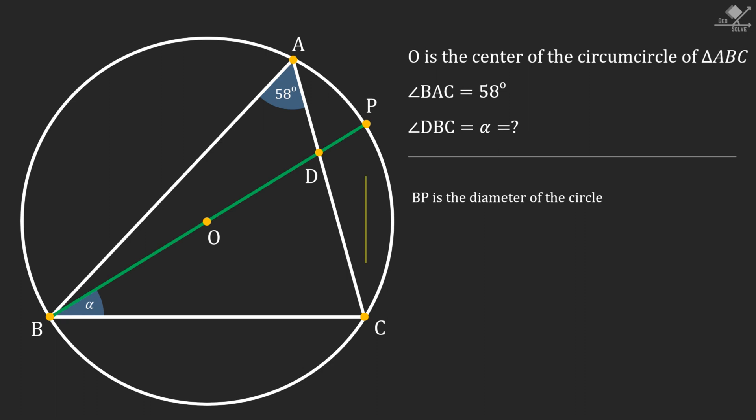Now let's connect point P and point C. We know that an angle subtended by a diameter on any point of a circle is 90 degrees. Therefore, angle BCP must be 90 degrees.